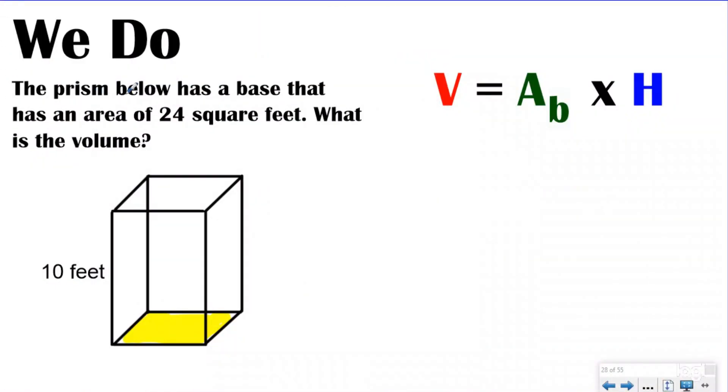So here it says, the prism below has a base that has an area of 24 square feet. What is the volume? So for this one, they're giving us the area of the base. So we can use this formula, we don't need to do the length times the width, because they're telling us what the area of the base is right here, it's 24.